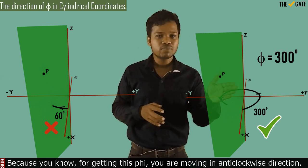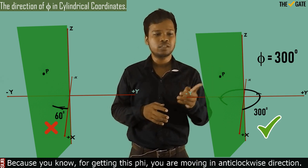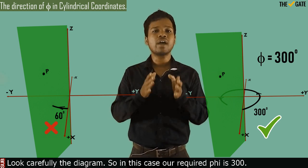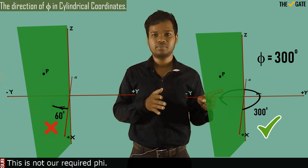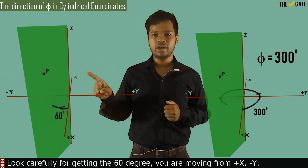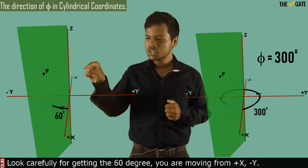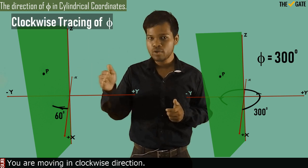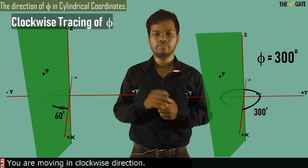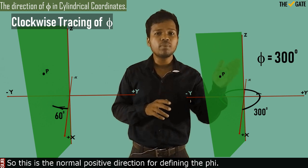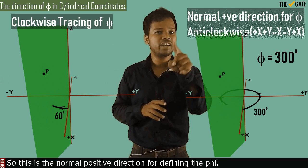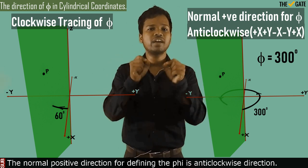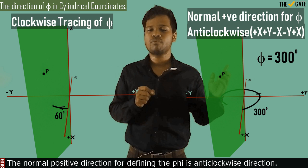Because for getting this phi, you are moving in the anticlockwise direction — look carefully in the diagram. So in this case, our required phi is 300 degrees. This is not our required phi. Look carefully: for getting 60 degrees, you are moving from plus x to minus y — you are moving in the clockwise direction. So the normal positive direction for defining phi is anticlockwise from the reference.